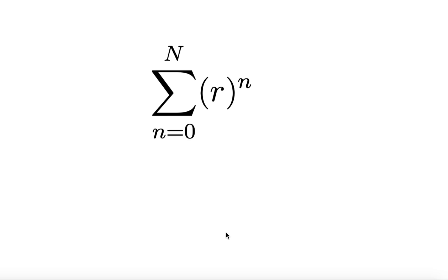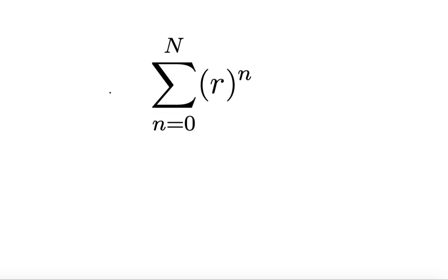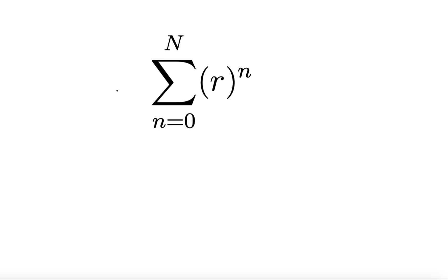When Isaac Newton first began building a calculus for physics, he didn't start by looking into the ideas of a derivative and an integral. Limits came way after he was gone. He actually started by working with infinite series — infinite sums of terms — and he built on his work in the binomial theorem. Today, we're going to take a look at arguably the most important series of them all, called the geometric series.